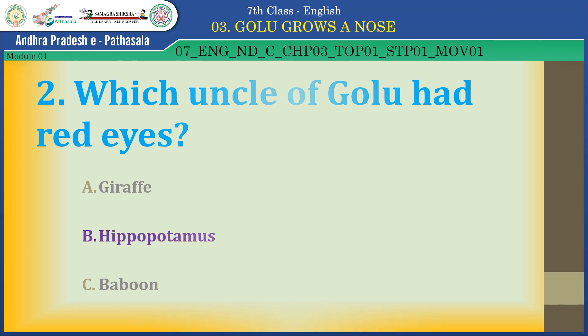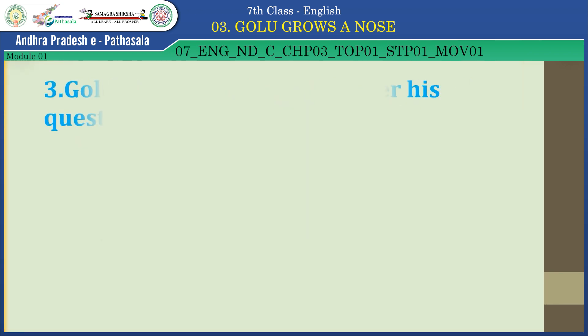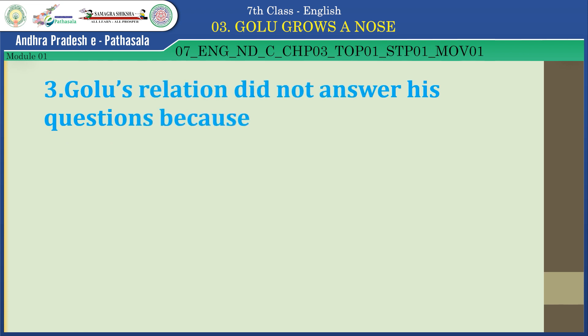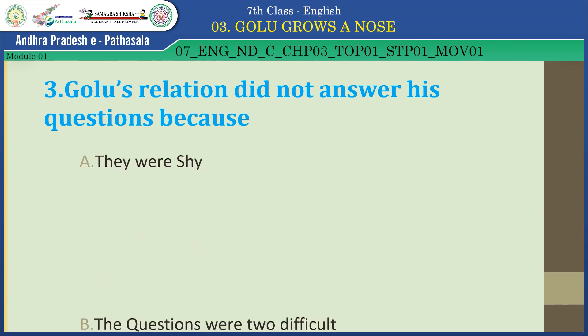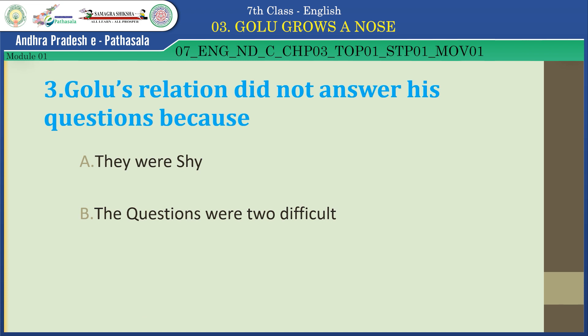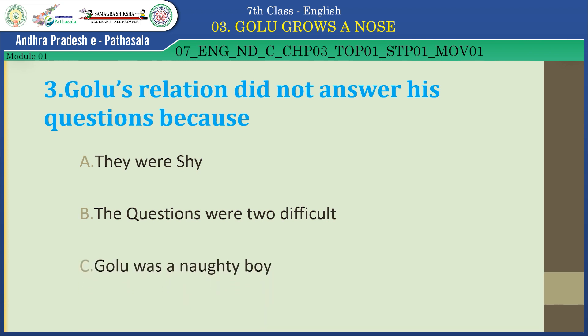Golu's relations did not answer his questions because — A. They were shy, B. The questions were too difficult, C. Golu was a naughty boy. Yes, the answer is B — the questions were too difficult to answer. Very well done.